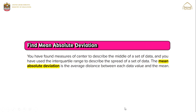Key vocabulary: mean absolute deviation. The mean absolute deviation is the average distance between each data value and the mean. You have found measures of center to describe the middle of a set of data, and you have used the interquartile range to describe the spread of a set of data.